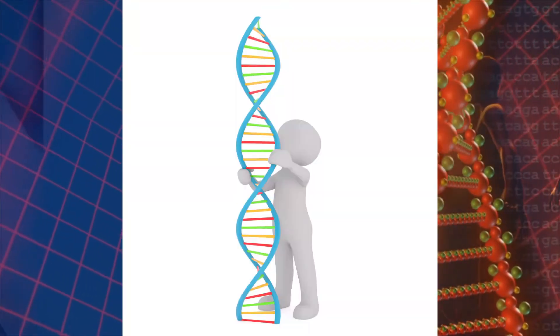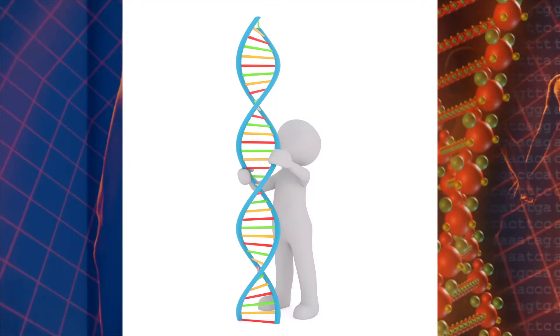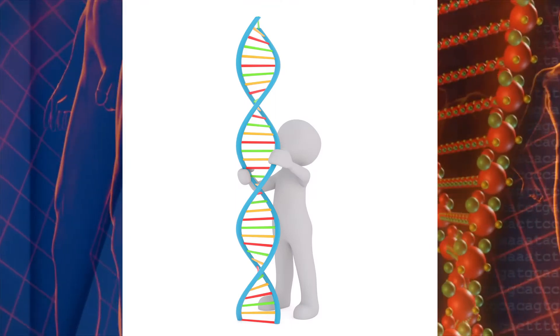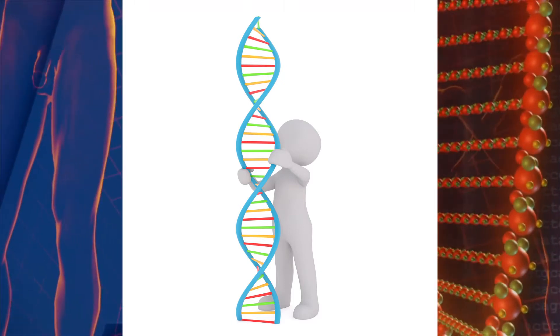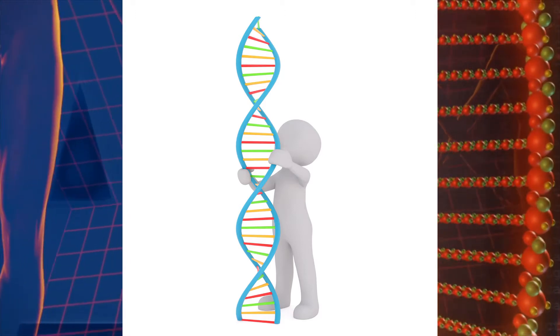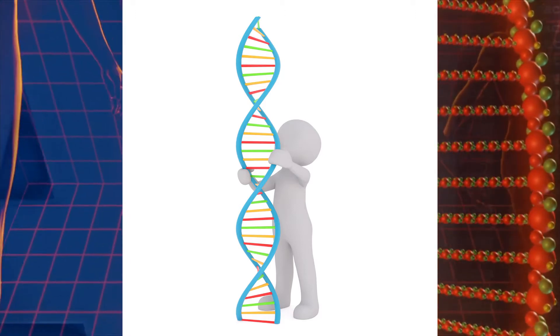This is because you cannot measure the DNA directly, as that should always be the same, except when the cells are dividing. You will always have the same number of copies of the gene in your genome.